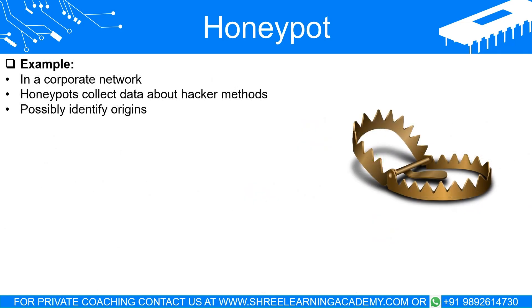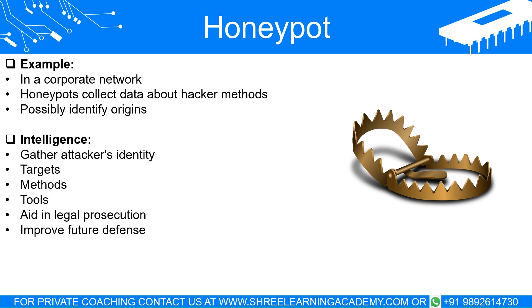As an example, let's imagine a corporate network that includes a honeypot system. A hacker might scan the network for vulnerabilities and come across the honeypot, believing it to be an easy target. They attempt to break into it. As they do so, the system administrator can watch their activities, collect data about their methods, and possibly even identify who they are or where they are coming from. All the while, the hacker is oblivious to the fact that they are merely attacking a decoy. Honeypots can gather details about the attacker's identity, intended targets, attack methods and tools, potentially aiding in legal prosecution and improving future defense mechanisms.